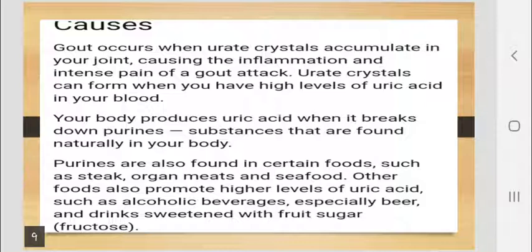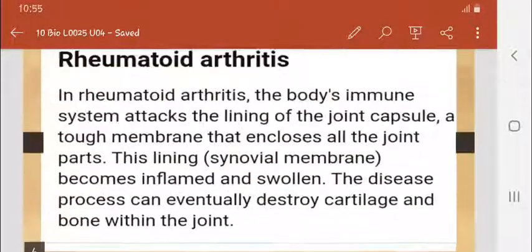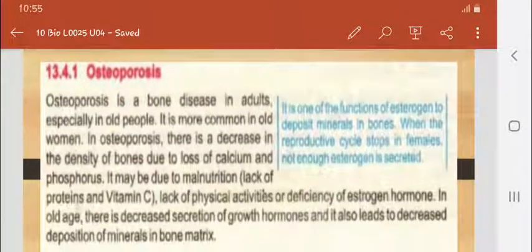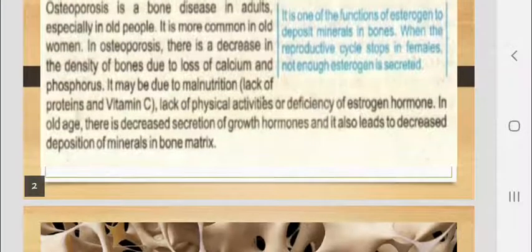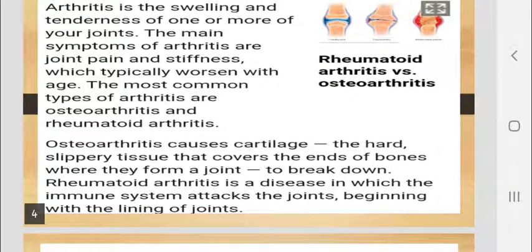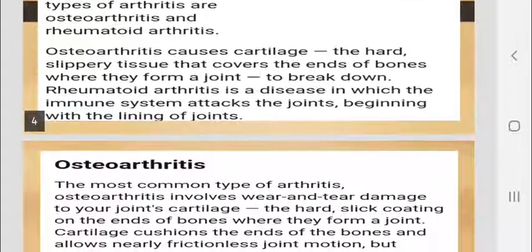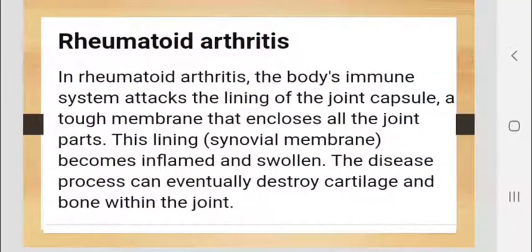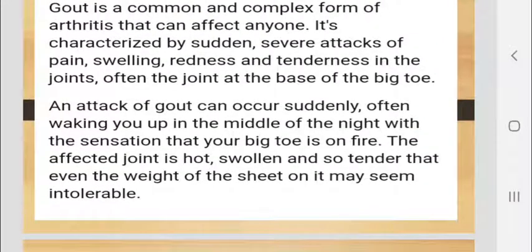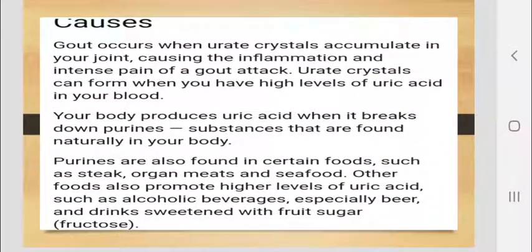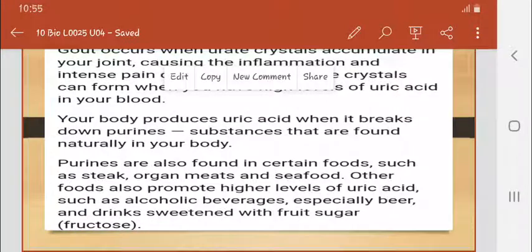Today's topic was about skeletal disorders, in which we discussed three disorders. First is osteoporosis, most commonly found in women. Second is arthritis — basically joint swelling and tenderness — and its types: osteoarthritis and rheumatoid arthritis. Third is gout, and we discussed the symptoms and causes of gout. Hope you understood the topic well.